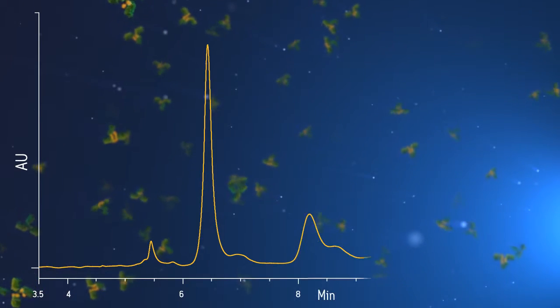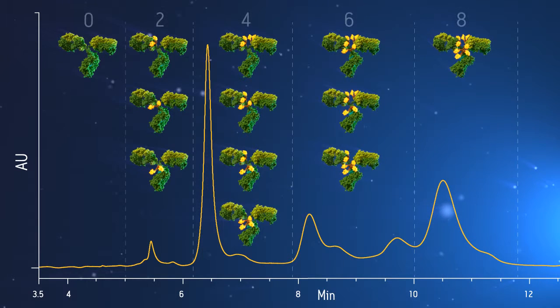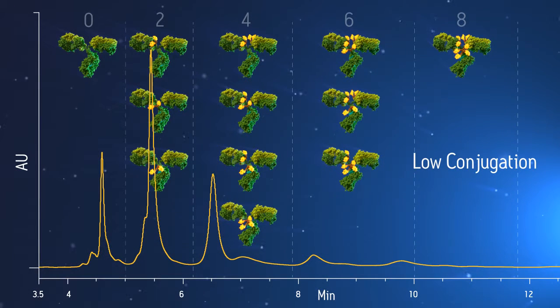Hydrophobic interaction chromatography generates a pattern of peaks distinguished by their level of conjugation. Changing the level of conjugation shifts the proportions of the peaks in an easily observable way, providing a quick profile of the reaction.